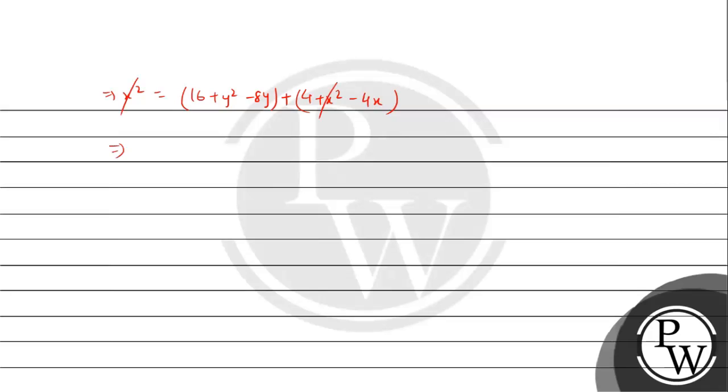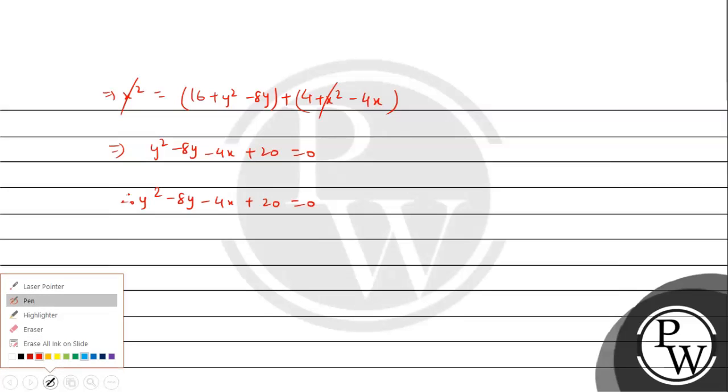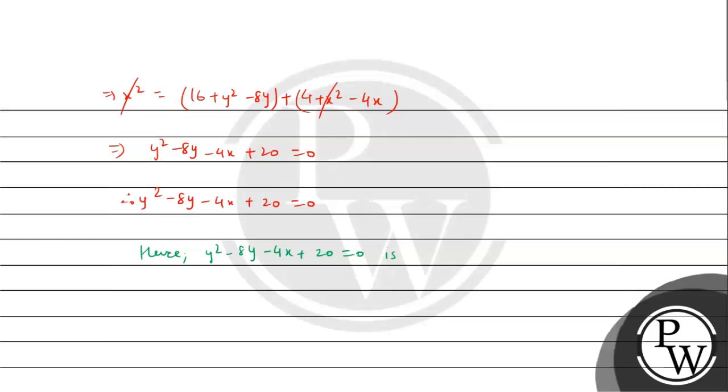Then simplifying, x² will cancel out. So we get y² - 8y - 4x + 20 = 0.